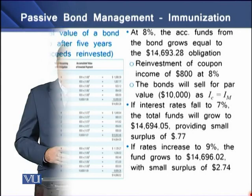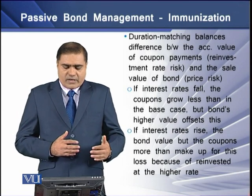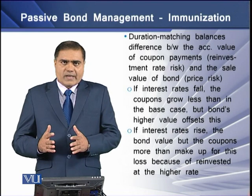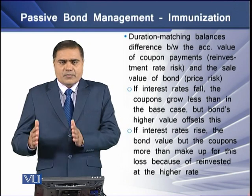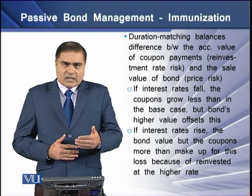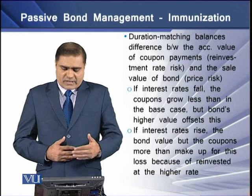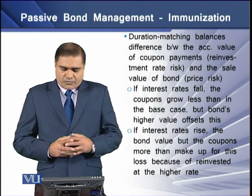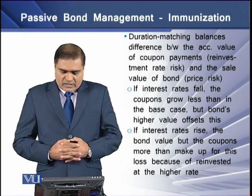Duration matching balances the accumulated value of coupon payments and the sale value of the bond — that is the price risk — against the reinvestment rate risk. If interest rates fall, coupons grow less than the base case, but the bond's higher value offsets this. If interest rates rise, the bond value changes, but the coupons more than make up for the loss because they are reinvested at the higher rate.